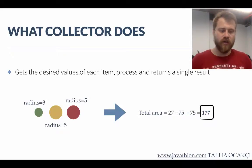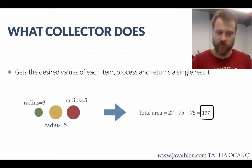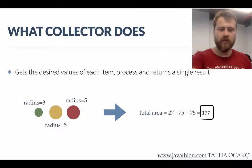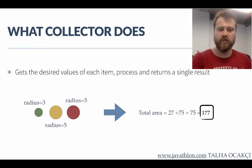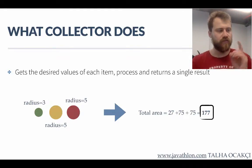Collectors are reducers. Let's say we have some circles with different radii in our stream: radius 3 cm, 5 cm, and 5 cm. Our collector will find the total area of these shapes. Since the area of a circle is pi times r squared, it calculates each area and our collector will sum up all the areas of these circles into a single result.